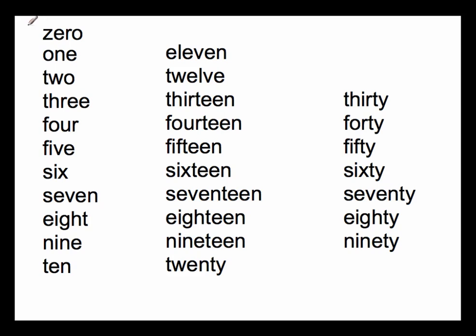They're just our counting words — the word that we say when we write down the actual symbol for the number. So when we say zero, that's the number we use. When we say one, that's what we write. Then we have two, three, four, five, six, seven, eight. Notice the number word for eight: this is eight the numeral, and this is eight the word.